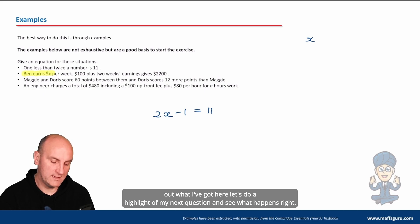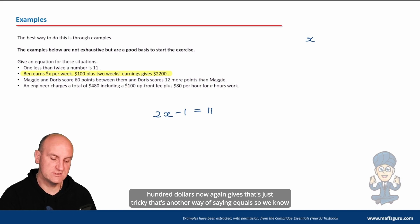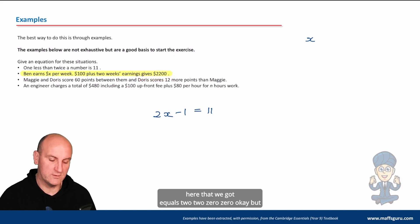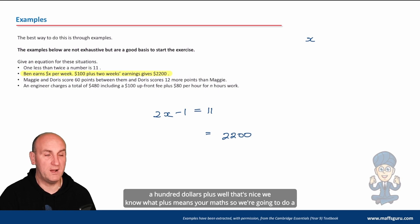Let's do the next one. Ben earns x dollars per week. A hundred dollars plus two weeks earnings gives two thousand two hundred dollars. Gives - that's just tricky, that's another way of saying equals. So we know here that we got equals 2200.